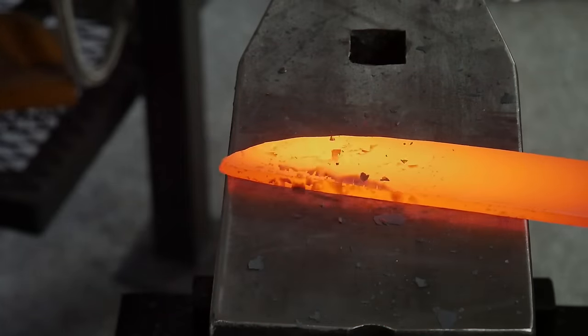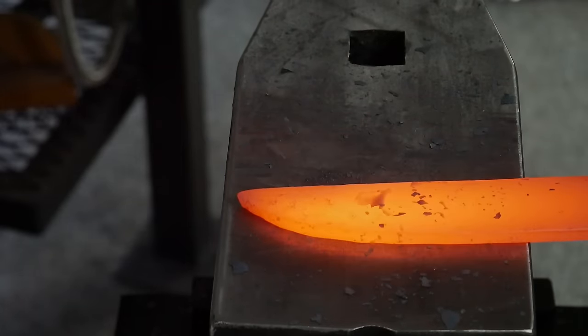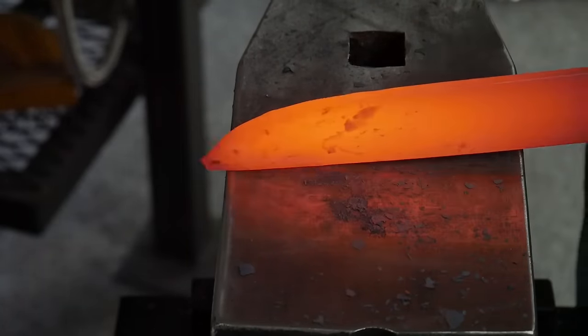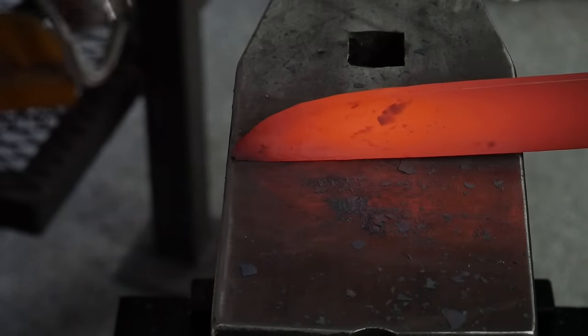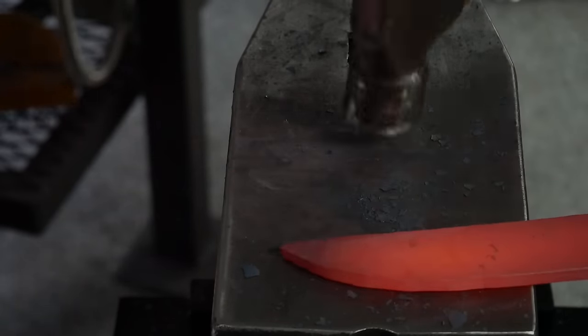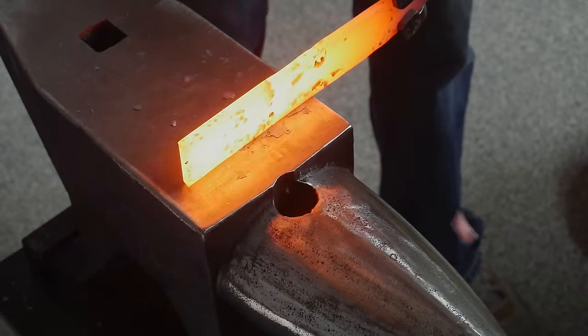However, once I start forging my bevels later this will curve up and be the spine. At this juncture I should have had less of a curve here and more of a Viking sax shape to achieve the clip that I was aiming for, however the 2x72 belt grinder fixes this issue later.